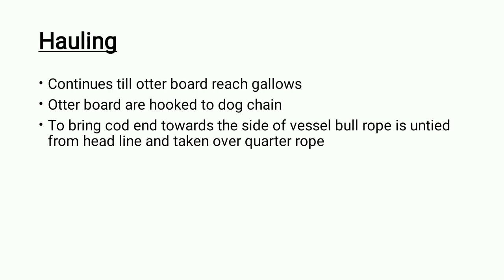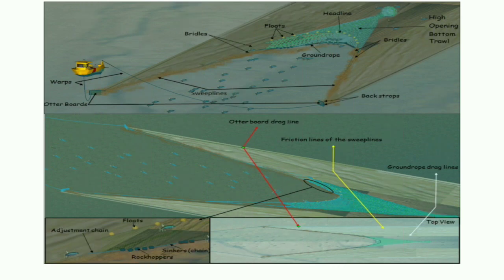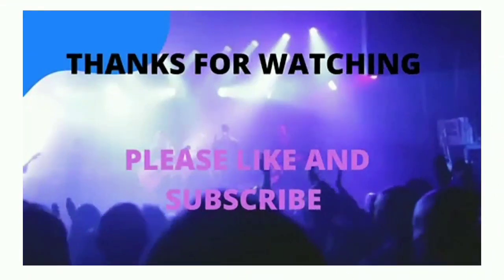This is an image of the trawl net showing how warps are connected to the sweep lines and the otter boards, and the otter boards are connected to the backstrobes. Friction lines and sweep lines are shown. It is a top view — floats and sinkers are also shown. The upper part is called the headline, the lower panel is called the foot line, and floats and sinkers are attached to it. That was the operation of the trawl net. Thanks for watching. If you want videos in Hindi also, please comment below. Stay tuned for the next video.